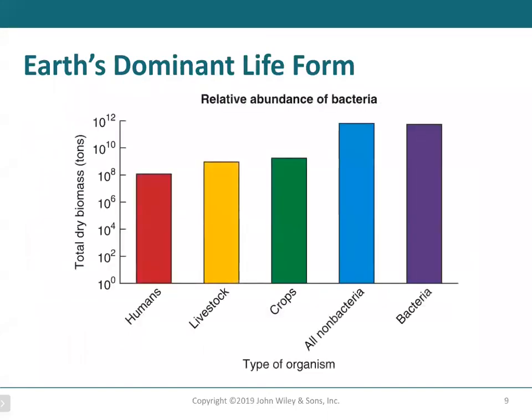Microorganisms are the dominant life form on Earth. So how do we say that? This is a logarithmic graph. For humans, this is our dry biomass — not in terms of individual population numbers but in terms of weight. We are large, as are livestock and crops. But when we get the weights of all the bacteria and non-bacteria microorganisms, they are actually much higher on the graph than us.